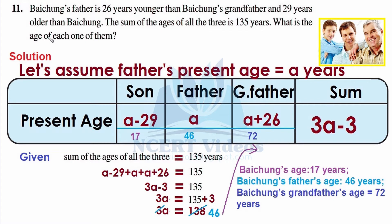While reading this question, it appears to be a complex one, but in actual, when we understand, the problem is very simple. We have one individual named Baichung, he has a father, and the question also talks about a grandfather. So there are three generations involved. The question asks to find their individual ages, and there are certain hints given.